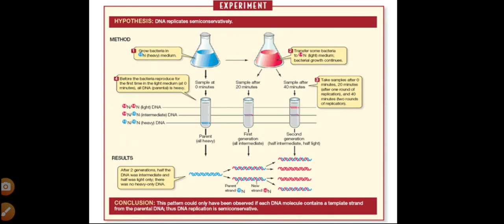In the semi-conservative method of replication, after replication, the newly formed DNA molecule — the double helical structure — consists of one new strand and one old strand. One old strand is conserved in this method. So one old and one new strand — this is called the semi-conservative method.